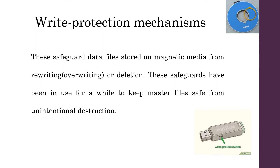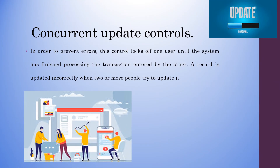Write protection mechanisms are used to safeguard data files stored in magnetic media from rewriting or deletion. These safeguards keep master files safe from unintentional destruction. Concurrent update controls prevent errors by locking off one user until the system has finished processing the transaction entered by the other, since a record can be updated incorrectly when two or more people try to update it simultaneously.